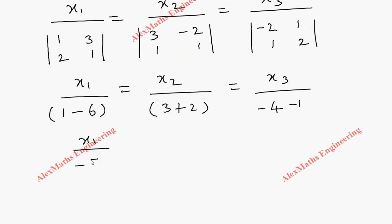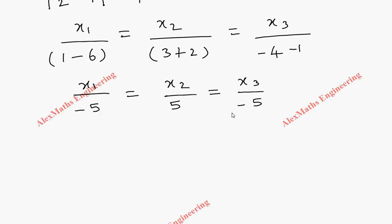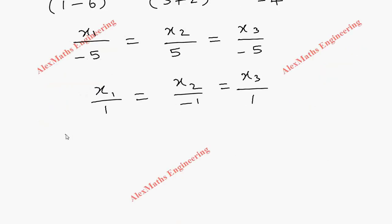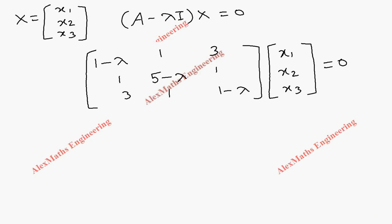So x1 over minus 5 equals x2 over 5 equals x3 over minus 5. Removing the common factor of minus 5 by changing signs throughout gives x1 over 1 equals x2 over minus 1 equals x3 over 1. The eigenvector corresponding to lambda equals 3 is X2 equals [1, minus 1, 1].